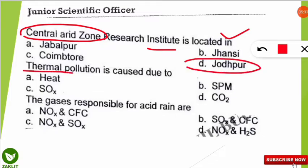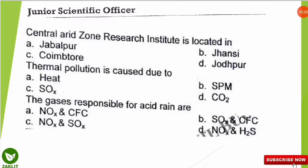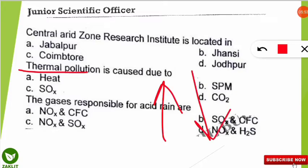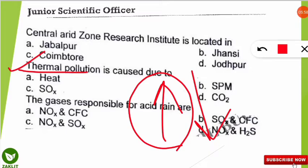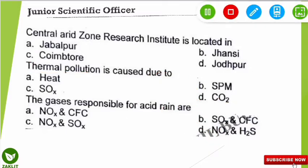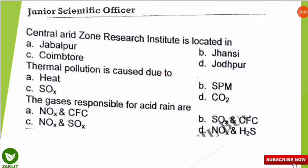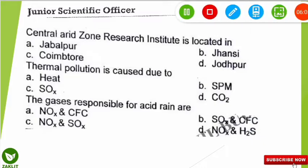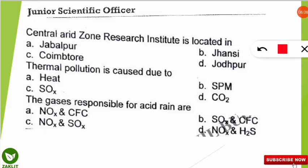The next question: thermal pollution is caused due to which of the following? To know the answer, we should understand what thermal pollution is. Thermal pollution is an abnormal or sudden increase or decrease in the temperature of a natural water body — it is not always an increase; a decrease from normal temperature is also thermal pollution. The correct option is that it is caused due to change in heat — an abnormality in heat.